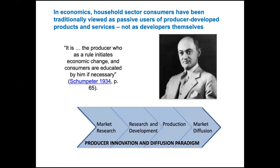The first thing is to frame this. That picture is Schumpeter in one of his more cheerful moments. In economics, it's been assumed that producers are the innovators. The typical linear model is how innovation is supposed to work: market research, followed by R&D, production, and market diffusion - all by paid employees. Schumpeter said it's the producer who initiates economic change, and consumers are educated by him if necessary.